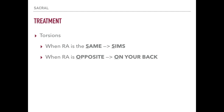That wraps up everything you need to know about sacral dysfunctions. In summary, the highest yield material from this lecture is sacral torsions. Go back and make sure you understand how rotation and axis work, how the sacrum moves, and the relationship between L5 dysfunctions — specifically how L5 rotates and side bends relative to sacral motion. These relationships are super high yield, so take the time to learn these rules and don't miss free points on test day.